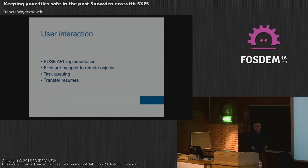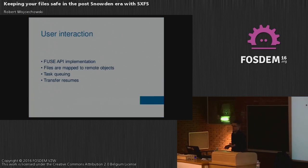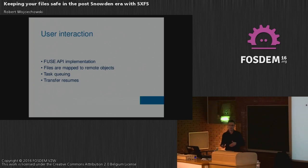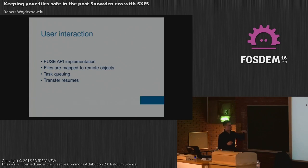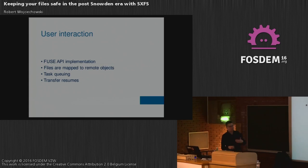From the user perspective, you have to deal with the FUSE API, which means that the user will only have to use the software as a regular local file system. You don't really have to care about what you are doing — you just copy a file, remove it, and so on. SXFS works as a mapping to remote objects, so the file is mapped to the object stored in the cluster. SXFS also supports task queuing and transfer resumes, which makes it quite robust when you re-upload your data.